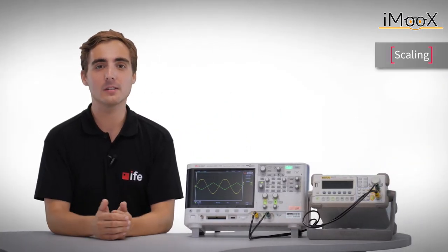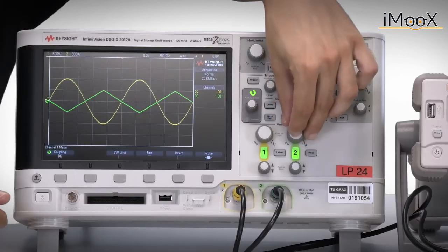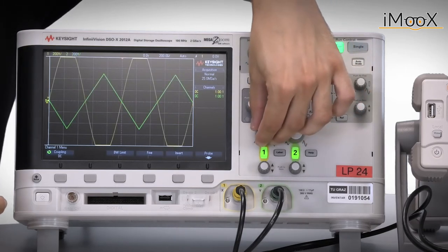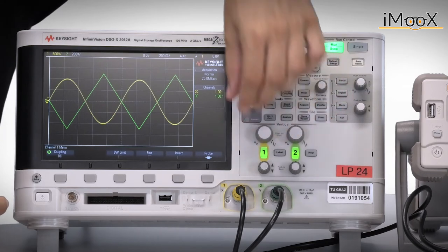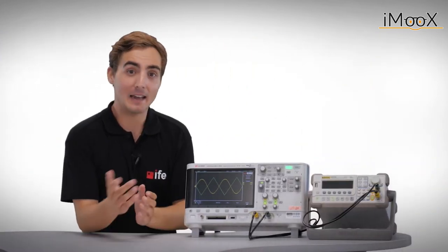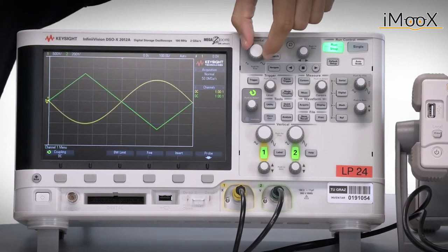However, the mentioned scale is not fixed. The voltage axis can be changed by the vertical scale control knobs for each channel separately, and as you see, also the volts per division have changed accordingly. The time axis is common for both channels. It can be changed by the horizontal scale knob.